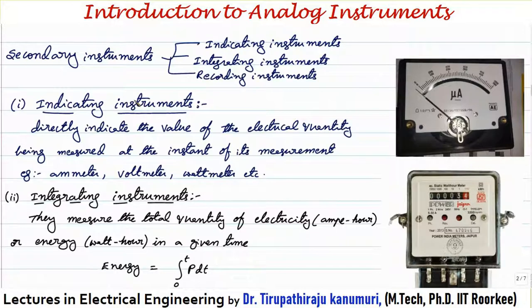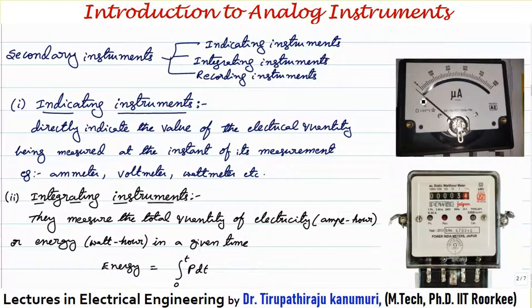Secondary instruments can be classified into three types: indicating instruments, integrating instruments, and recording instruments. Indicating instruments directly indicate the value of the electrical quantity being measured at the instant of measurement. Examples are ammeter, voltmeter, and wattmeter — they directly show the value at the instant of measurement.